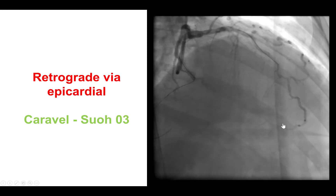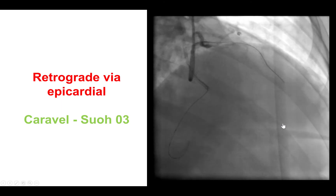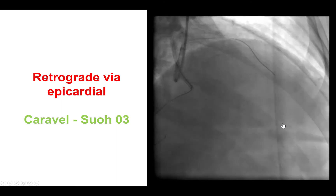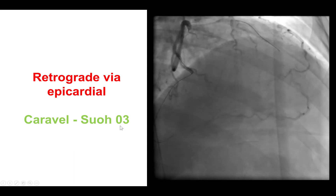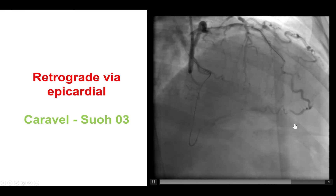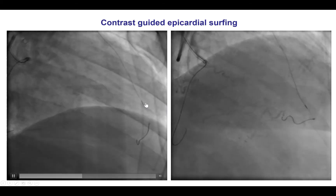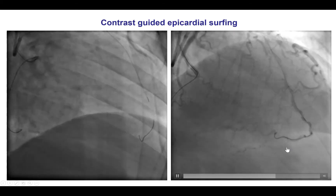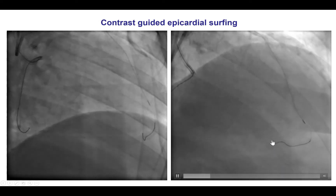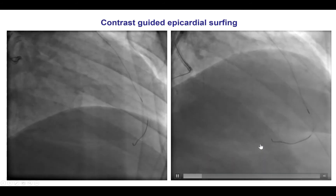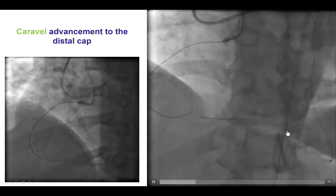After considerable time and multiple attempts, we finally decided to attempt retrograde via the epicardial, which had been planned as our last resort. We used a Caravelle, a low-profile microcatheter, and a SUO O3 guide wire — the softest guide wire available, with a distal tip of 0.3 grams, designed specifically for very tortuous epicardial collaterals. We advanced the Caravelle to the distal LAD and attempted wiring, making multiple attempts, turning to take the bends. The wire initially entered small branches, but eventually, through turning and release, straightened the tortuous collateral and entered the distal true lumen.